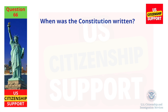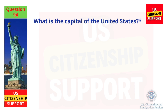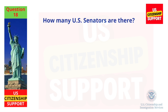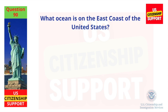When was the Constitution written? 1787. What is the capital of the United States? Washington DC. How many US Senators are there? 100. What ocean is on the East Coast of the United States? Atlantic Ocean.